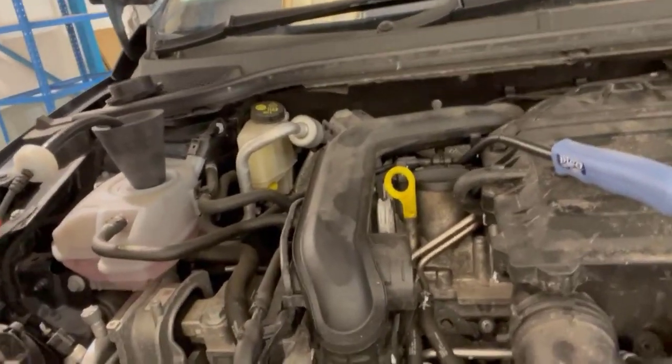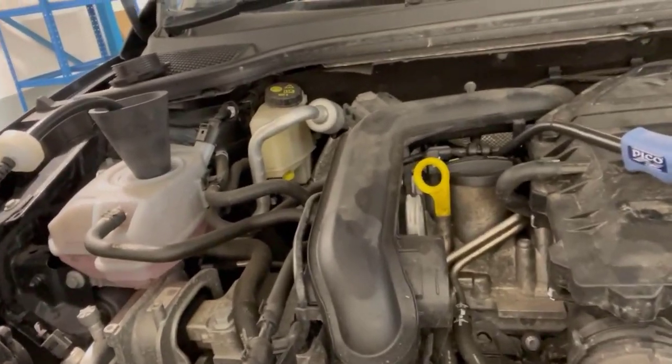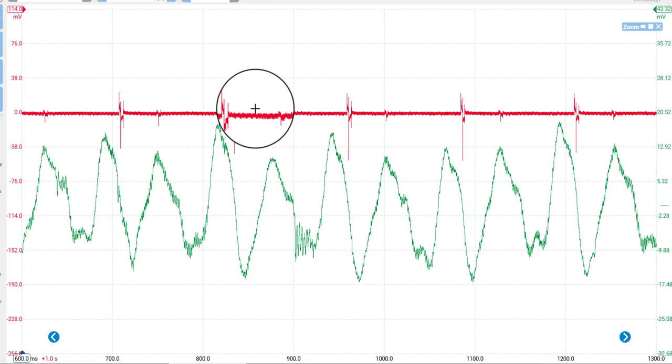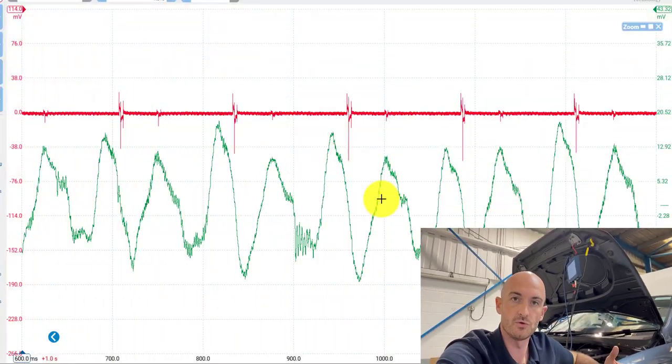I actually set this test up today on this three cylinder Volkswagen engine. This is a Seat, and this is what we got. We've got a trigger here on cylinder one, that's the ignition coil. However, look, we've got two pulses, not three. This is a three cylinder engine, so where are those two pulses coming from? I think we've cracked it.